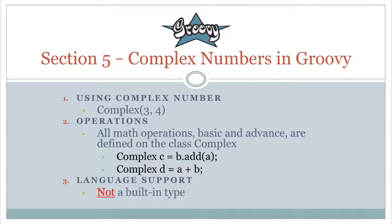This is because Groovy and Scala have a feature called operator overloading, similar to C++. Because complex numbers are built into Go, and Go doesn't have operator overloading, Go just treats them like any other number. But in Groovy we'll override the plus operator to make our complex numbers look built-in, even though they're not.